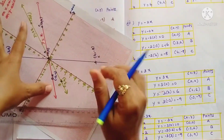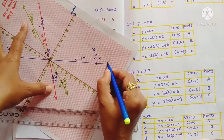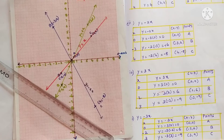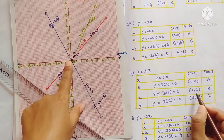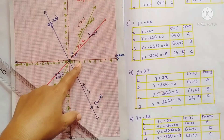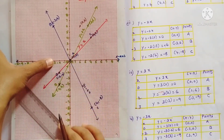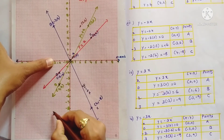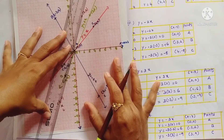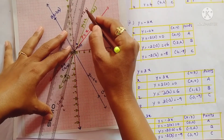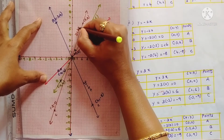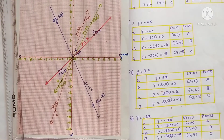This line is named y = -2x. Now the next graph, y = 3x: first point (0, 0), next point (2, 6) — plot 2 and 6. Third point (-3, -9) — plot -3 and -9. Join these three points using the scale. This is the graph of y = 3x.